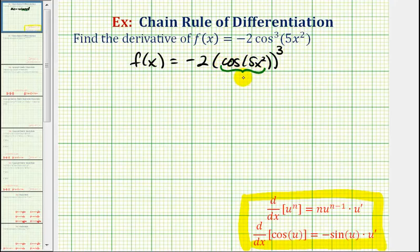so this would be our u if we're using these formulas here. Which means, if it's helpful, we can think of this as negative two u to the third. So to find f prime of x, we can apply the power rule here with the chain rule built in, so we're going to multiply by the exponent, that would give us negative six.